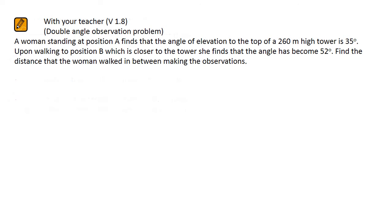In this question, a woman who's standing at position A finds the angle of elevation to the top of a 260m high tower is 35 degrees. Upon walking to position B, which is closer to the tower, she finds that the angle has become 52 degrees. We need to find the distance that the woman walked in between making her observations.